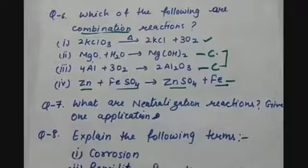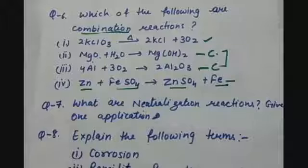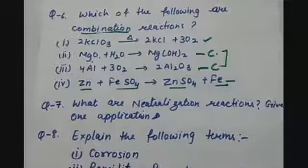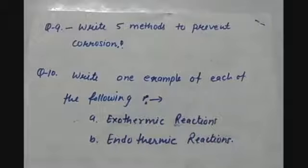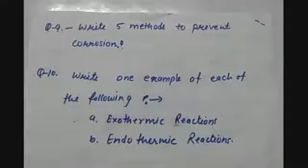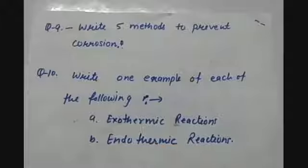Next, explain corrosion and rancidity and their preventive methods. Write five methods to prevent corrosion. They can be galvanization, electroplating, painting, or oiling. So these can be the methods to prevent corrosion.